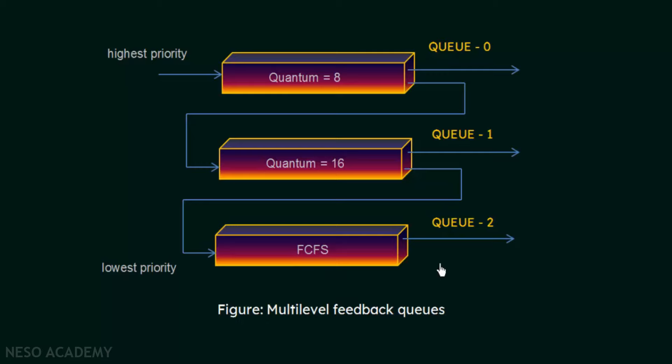So we see that there is scheduling happening among processes within the queues, scheduling happening among the queues themselves, and also processes moving from one queue to another. This is like an extension to multi-level queue scheduling — here, processes can move between the queues. In this example we have seen how processes move between queues based on certain criteria or parameters.